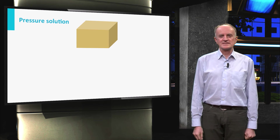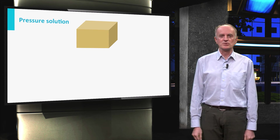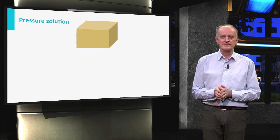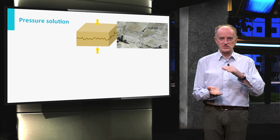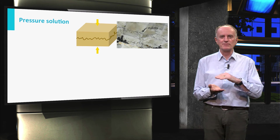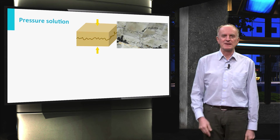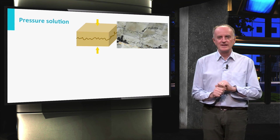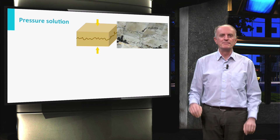A very important process taking place during the initial stage of deformation is pressure solution, by which parts of a rock dissolve when subjected to pressure. In the case of massive rocks, typically carbonates, pressure solution leads to the development of rugged surfaces called stylolites, characterized by peaks which are parallel to the direction of compression. Stylolites can be several meters long and often form in bundles.